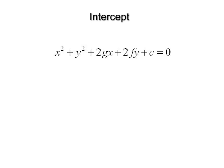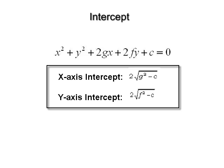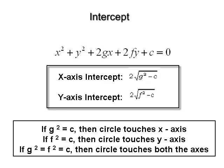For the circle x² + y² + 2gx + 2fy + c = 0: the length of the intercept on the x-axis is 2√(g² − c). If g² = c, then the circle touches the x-axis. If f² = c, then the circle touches the y-axis. If g² = f² = c, then the circle touches both axes.